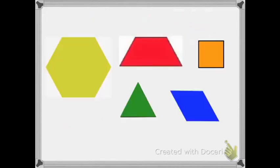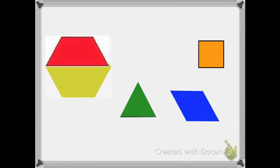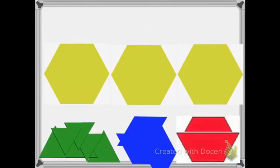So let's see how many trapezoids it takes to cover a yellow hexagon. It takes two equal sized trapezoids to cover the area of the yellow hexagon. And you can see none of the yellow hexagon is showing underneath the two red trapezoids.